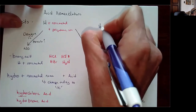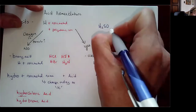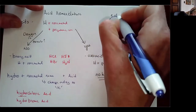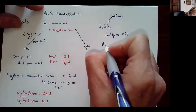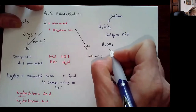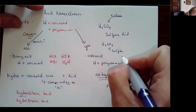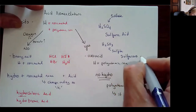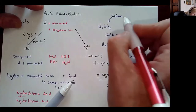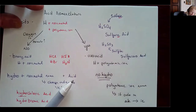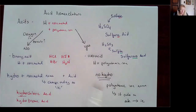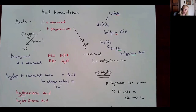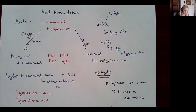For example, H₂SO₄ contains the sulfate polyatomic ion, so this would be sulfuric acid. H₂SO₃ contains the sulfite polyatomic ion, so this would be sulfurous acid. Notice that sulfate ends in '-ate' so it becomes '-ic', and sulfite ends in '-ite' so it becomes '-ous'. Remembering this nomenclature will help you write the chemical formula when given only the name of an acid.